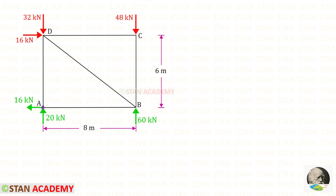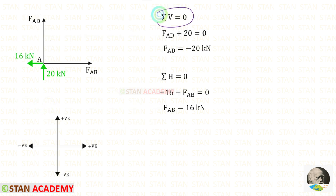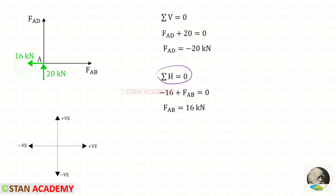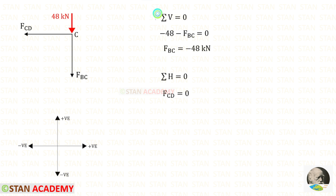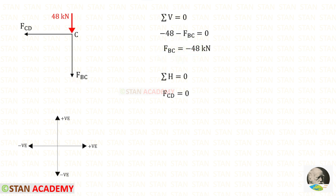Now we can find the member forces. First I am going to take joint A. Applying sigma V = 0: Fad and 20 are both acting upwards so both are positive; for Fad we will get −20. Applying sigma H = 0: 16 is acting towards the left side so it will be negative; Fab is acting towards the right side so it will be positive. For Fab we will get 16 kN. Now let us take joint C and find the member forces. Applying sigma V = 0: both forces are acting downwards so both are negative. For Fbc we will get −48.